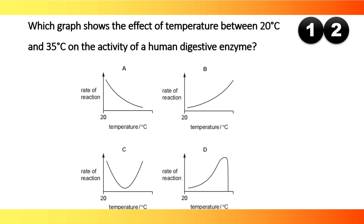Which graph shows the effect of temperature between 20 degrees Celsius and 35 degrees Celsius on the activity of a human digestive enzyme? The answer is B.